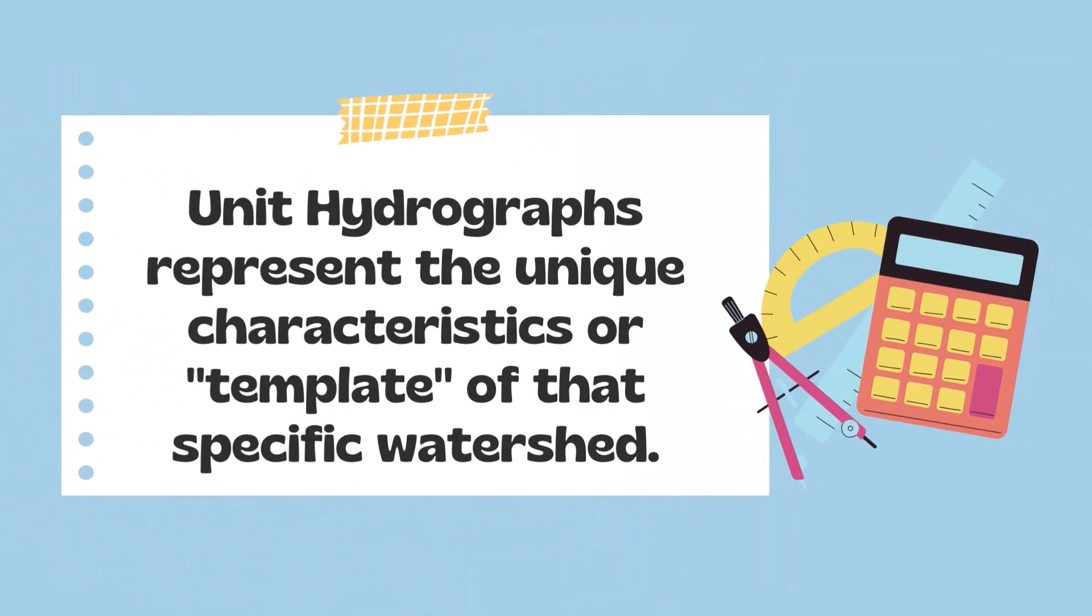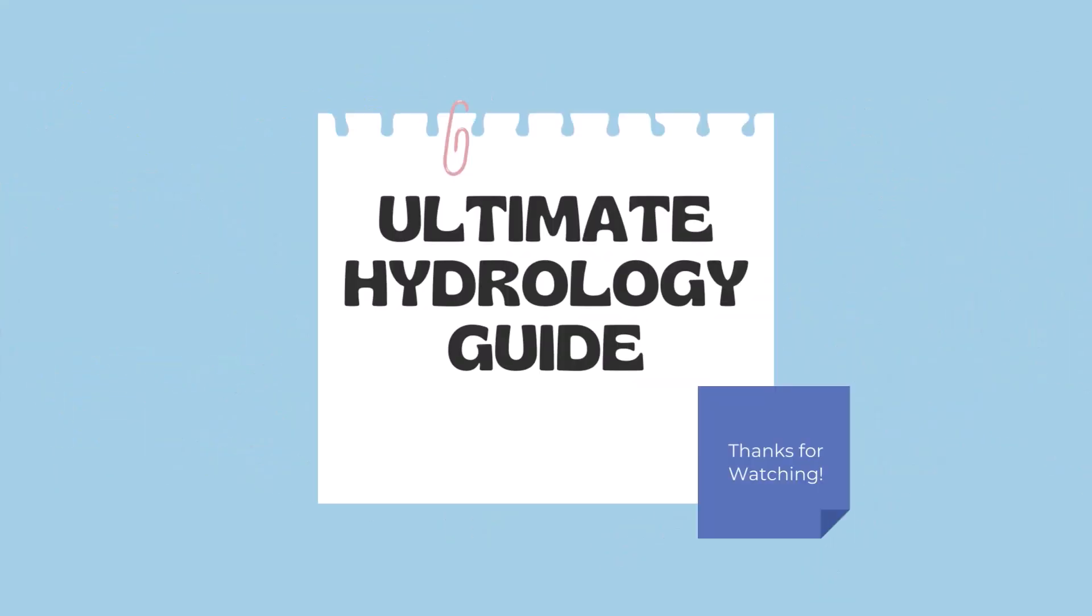Unit hydrographs represent the unique characteristics or template of that specific watershed. They can help us identify how that watershed will react to different rainfall events. We hope this video was useful. We have an Ultimate Hydrology Guide which explains the differences between different forms of hydrology such as continuous simulation, single event, and graphical methods. You can find that guide in the description below. Thank you so much for watching and we'll see you next time.